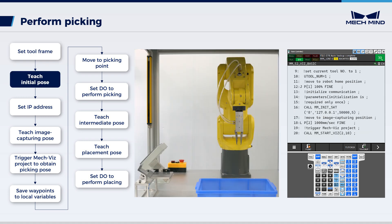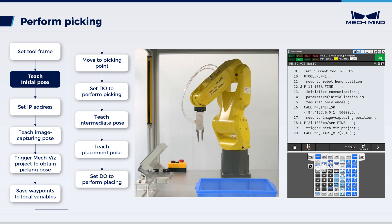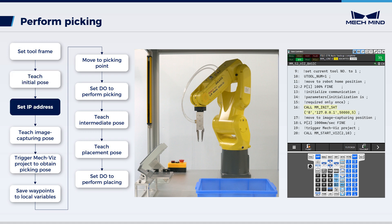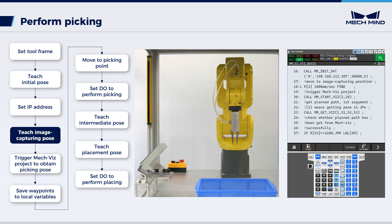Next, teach the initial pose. Move the robot to the initial position, which should be away from the objects to be picked and the surrounding devices, and should not block the camera's field of view. Teach the initial position in this step. Then, change the IP address of the robot to the IP address of the IPC. Afterwards, teach the image capturing pose by moving the robot to that position and recording the current position.